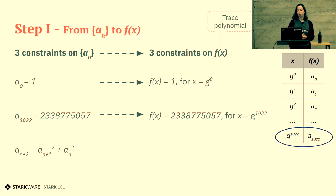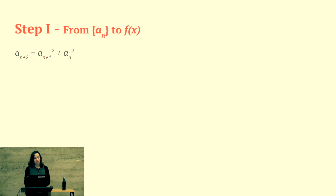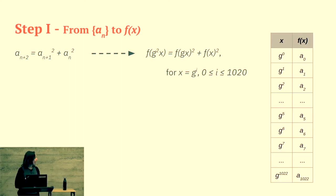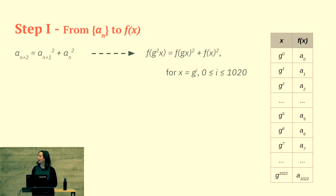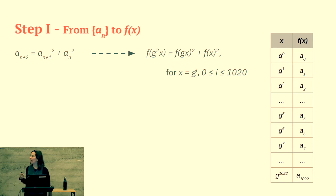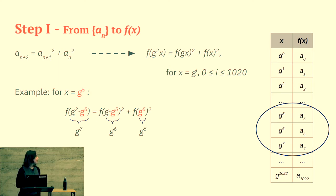The same for the second constraint — instead of writing that the last element should be this specific element, we can say that f equals this number for x equals g to the power of 1022. And for our constraint on each three consecutive elements, note that in order to shift from one row to the next, we need to multiply by g. So x, gx, and g²x are three consecutive rows. We can write the constraint using f(x), f(gx), and f(g²x) for any power of g between 0 to 1020.